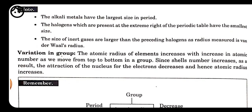Now, variation in group. A group means moving from top to bottom. The atomic radius of an element increases with increasing atomic number as we move from top to bottom. This happens because a new shell is introduced as we go down, and the attraction of electrons towards the nucleus decreases. Thus, the atomic radius goes on increasing.